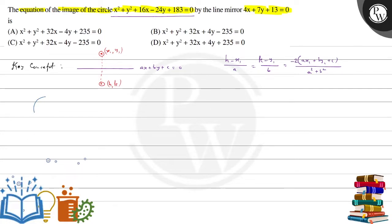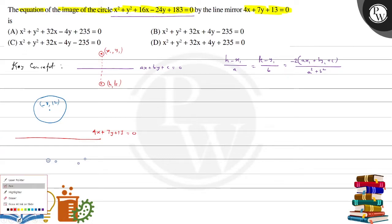Toh, humara paas basically a circle diya hua hai, uska equation diya hua hai. Is circle ka center humme patah hai, obviously, is circle ka, is circle ka about, joh image ho ga, uus equal to x plus 7y plus 13 equal to 0, which is actually very easy if you look at it carefully to understand.